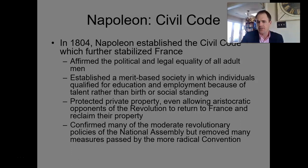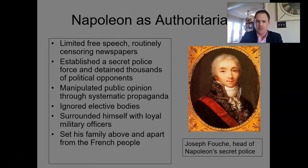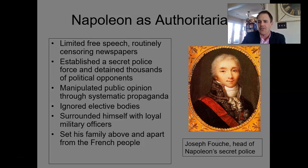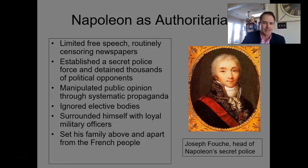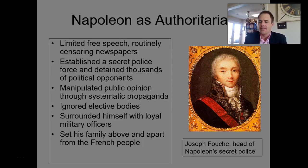Napoleon also establishes authoritarian rule — he limits free speech by censoring and closing newspapers, establishes a secret police, manipulates public opinion, and ignores elective bodies. This is why I say he brings an end to the revolution, because this is not these revolutionary ideals — he is firmly entrenching himself in power, as authoritarians tend to do.